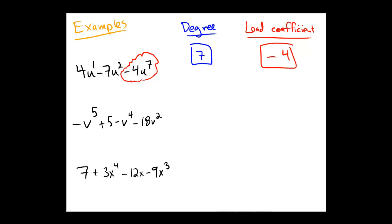On the next one we have negative v to the fifth plus five with no copies of v, so we call that a zero degree term, minus v to the power of four minus 18v squared. So among two, four, the hidden zero here, and the number five, the largest of these would be the number five. Hence that's the degree of the polynomial.